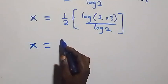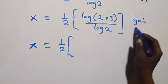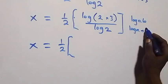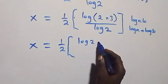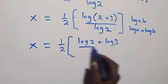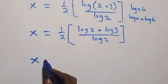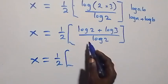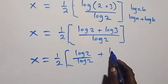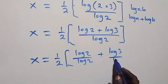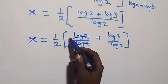We have x equals to half, and when we apply the law of log for log a times b, which we can separate as log a plus log b, we get log 2 plus log 3 divided by log 2, closing the bracket. Separating this fraction, we have log 2 over log 2 plus log 3 over log 2.